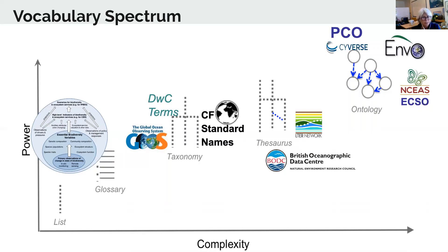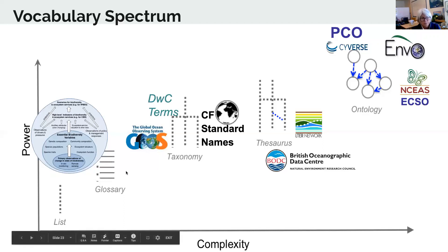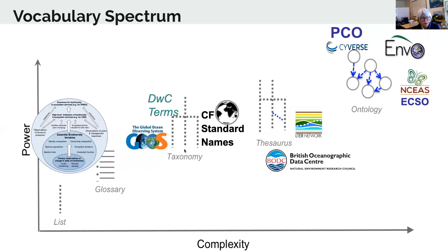You would start out with a simple list — a community has a list of important terms that may or may not include definitions. Often these are only captured as text in papers, editorials, or webpages. One example that's been passed around in the biodiversity community describes concepts called essential biodiversity variables. Since most of the terms include definitions, it's moving toward the next step — a glossary, which is a list of terms with definitions. The next step up would be a taxonomy where the terms are arranged in branches like a Linnaean taxonomy. In a taxonomy of animals, you could say all bears are mammals because they're on the same branch of a tree.